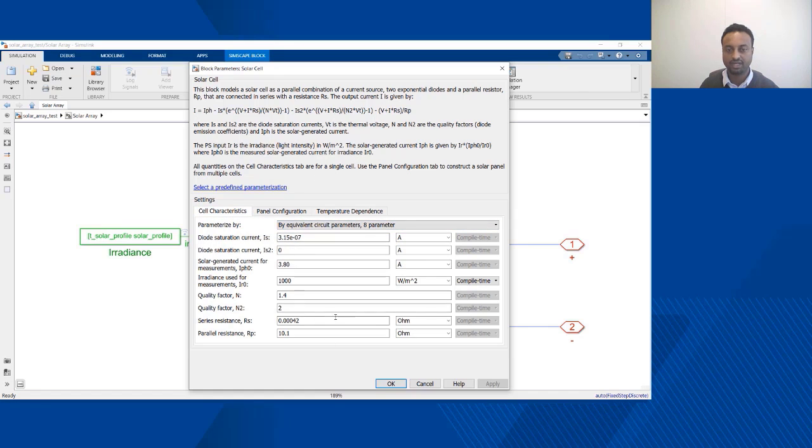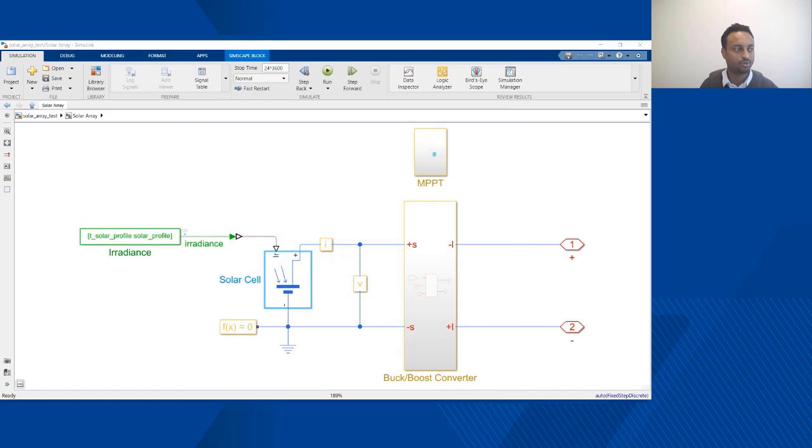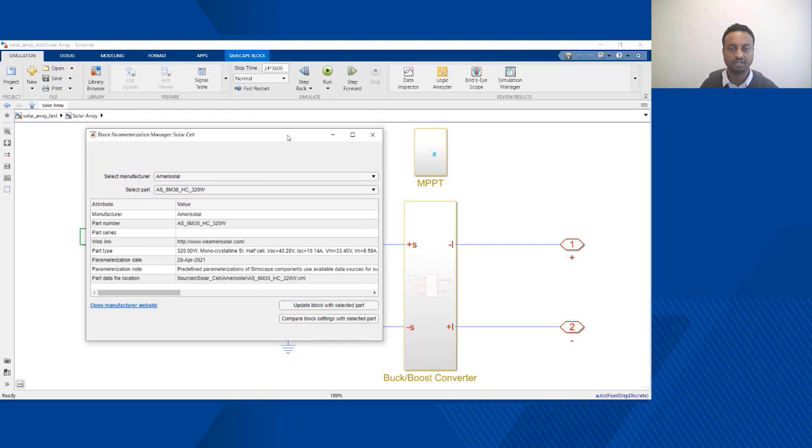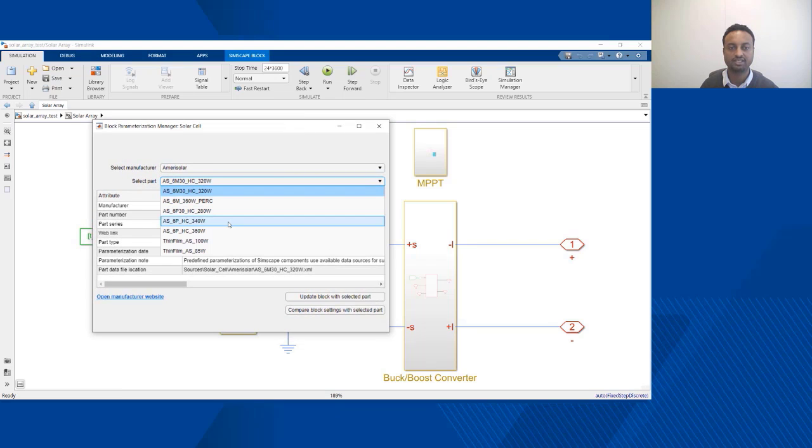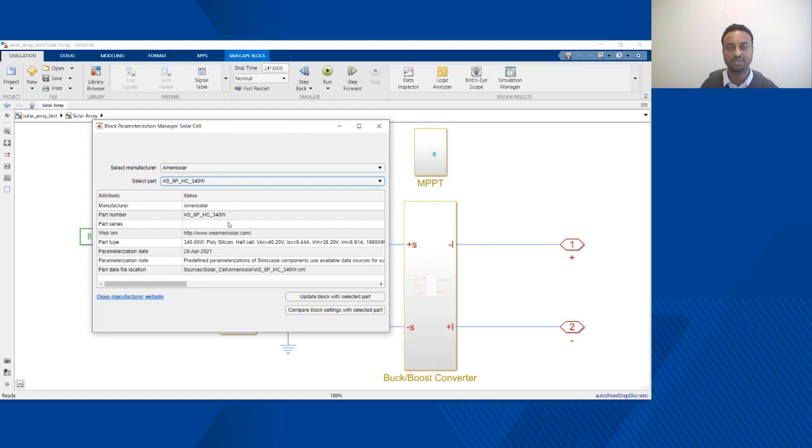While this manual parameterization is a possibility, there is also an option to actually select a manufacturer and then a part number so that there is an automatic parameterization based on data obtained from manufacturer data sheets.